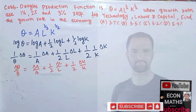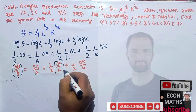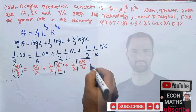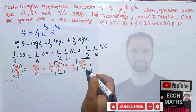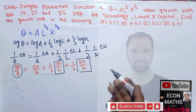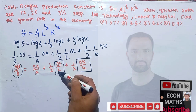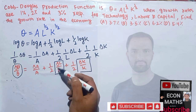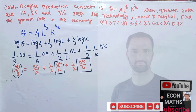Now what does each term tell us? dQ/Q shows us the growth rate of output. dL/L shows us the growth rate of labor. dK/K shows us the growth rate of capital. The change in capital divided by the initial capital gives us the percentage growth. Similarly, the change in labor divided by original labor gives us labor growth, and the change in output divided by the initial level of output gives us the percentage change in output.